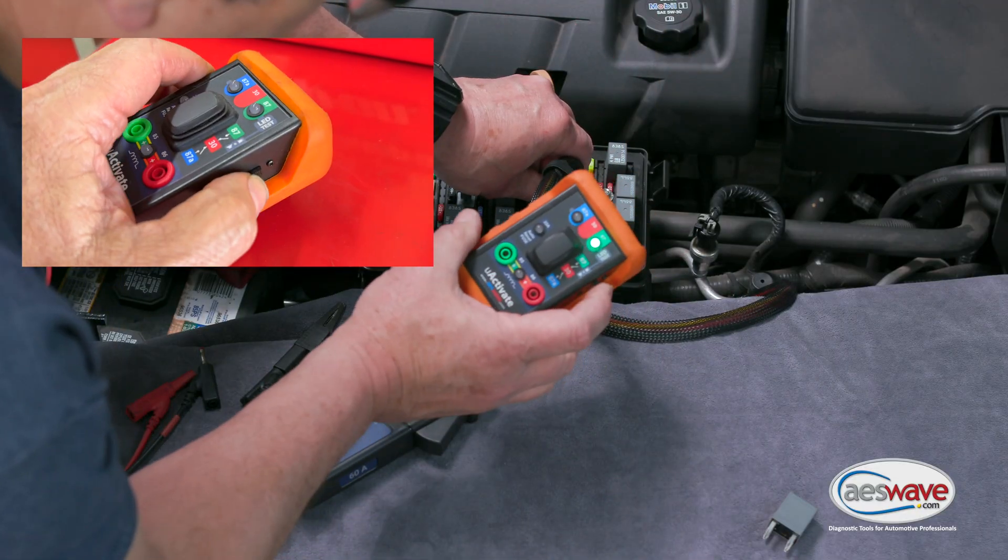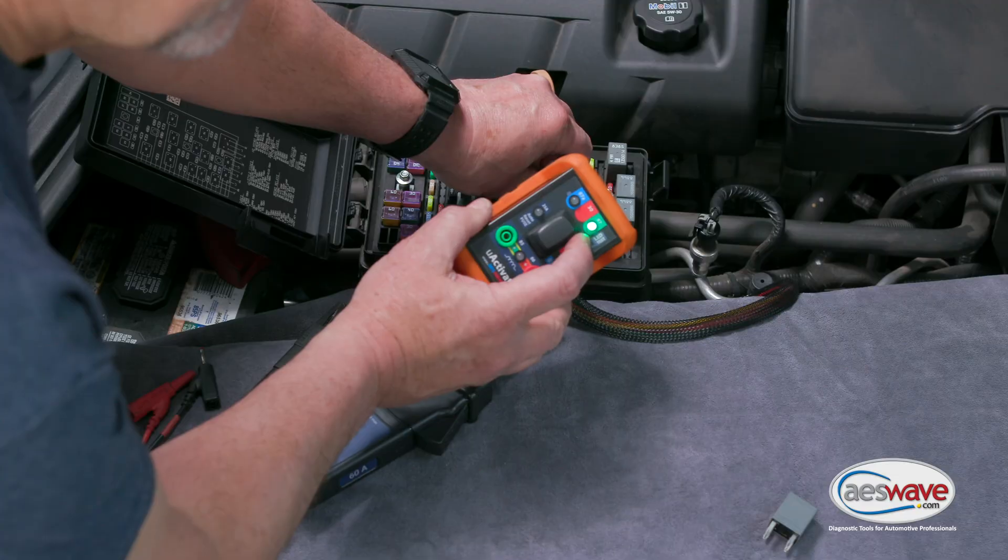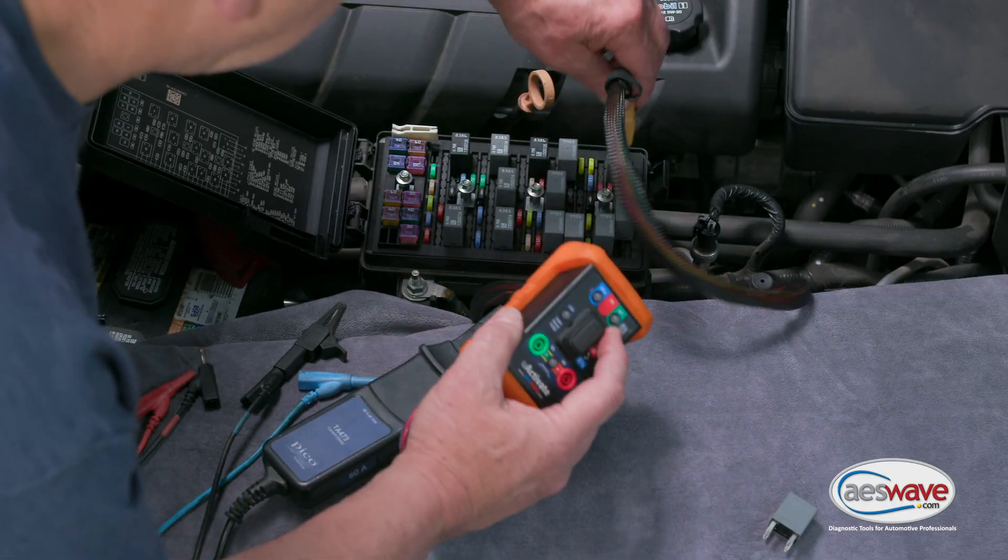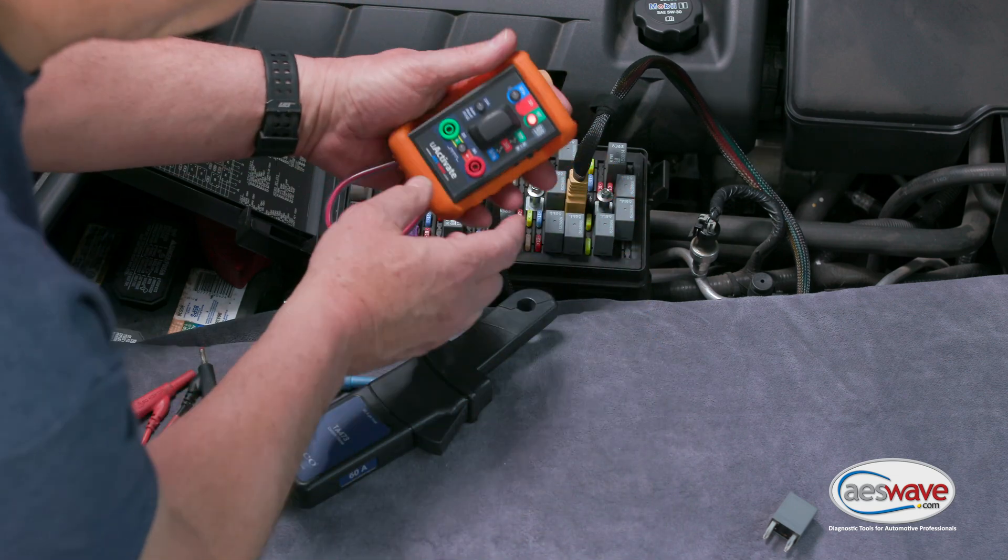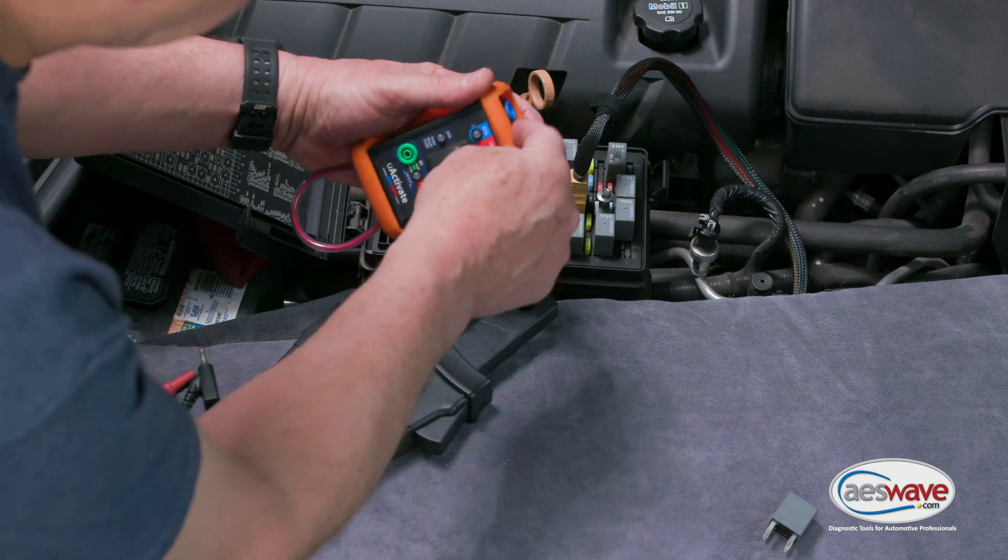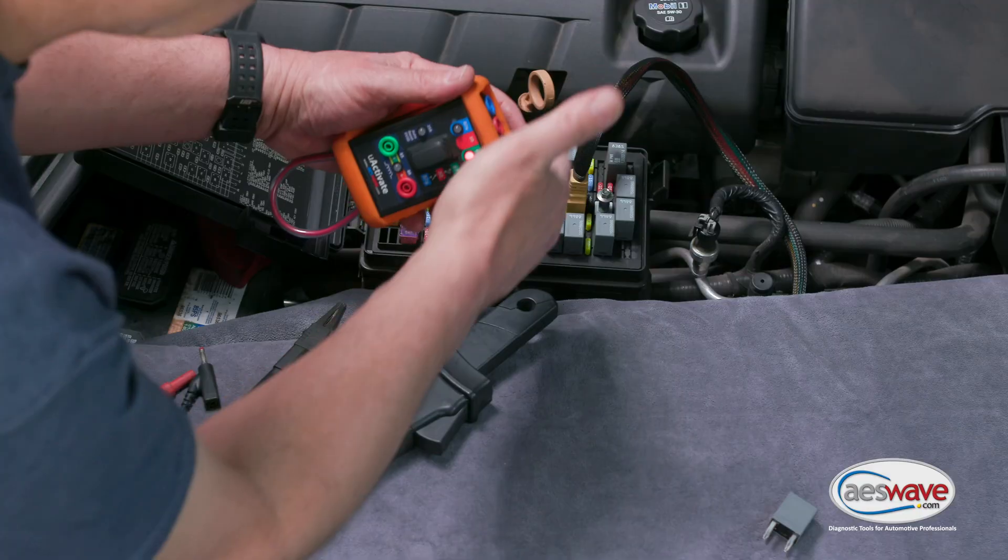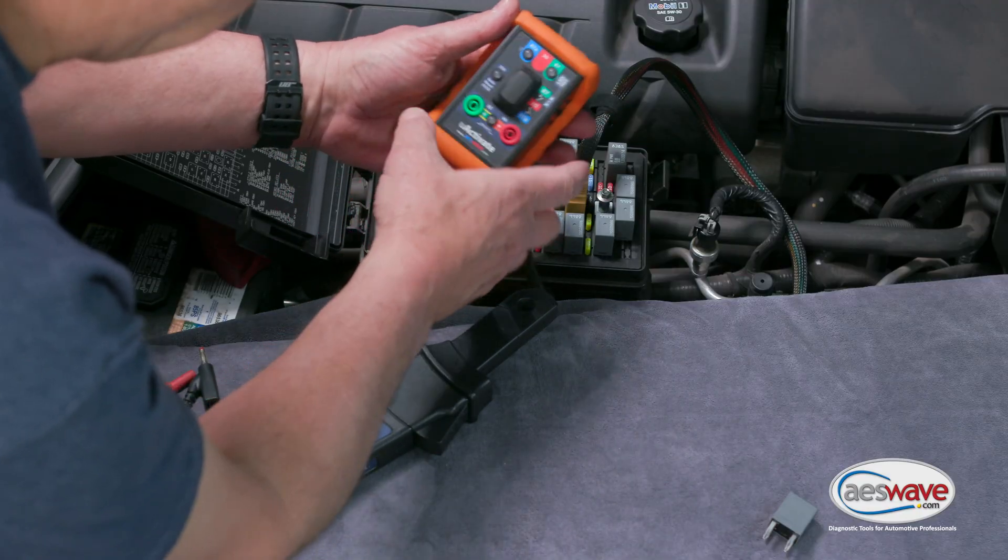We're going to turn on our LED to make sure we have the orientation right. As you can see it's green. I need to flip it around so that it is red. That means that we have power on terminal 30 as designed, and then 87 is going to be out.